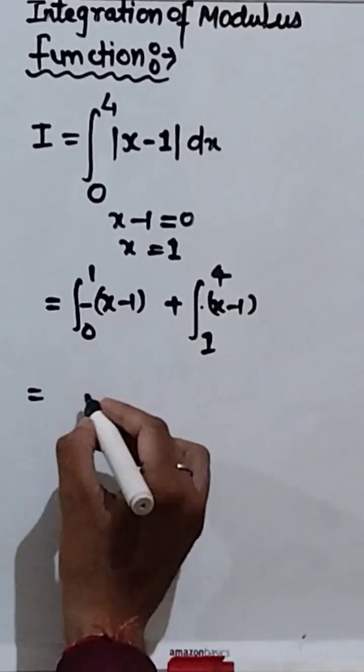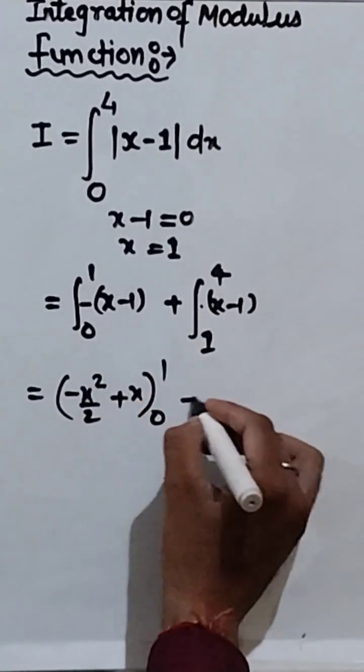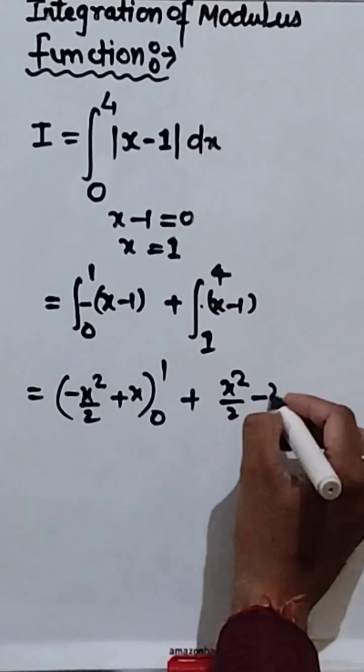Now, integrate. What is the value of integration of x? We get x square upon 2. What is integration of plus 1? x, 0 to 1. x square upon 2 minus x.